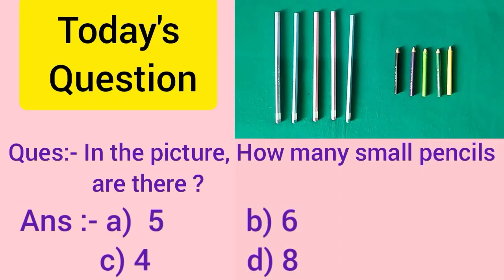Now, today's question. In the picture, how many small pencils are there? There are 4 answers. A: 5, B: 6, C: 4, D: 8. So, according to the picture, the right answer is A — 5 pencils.